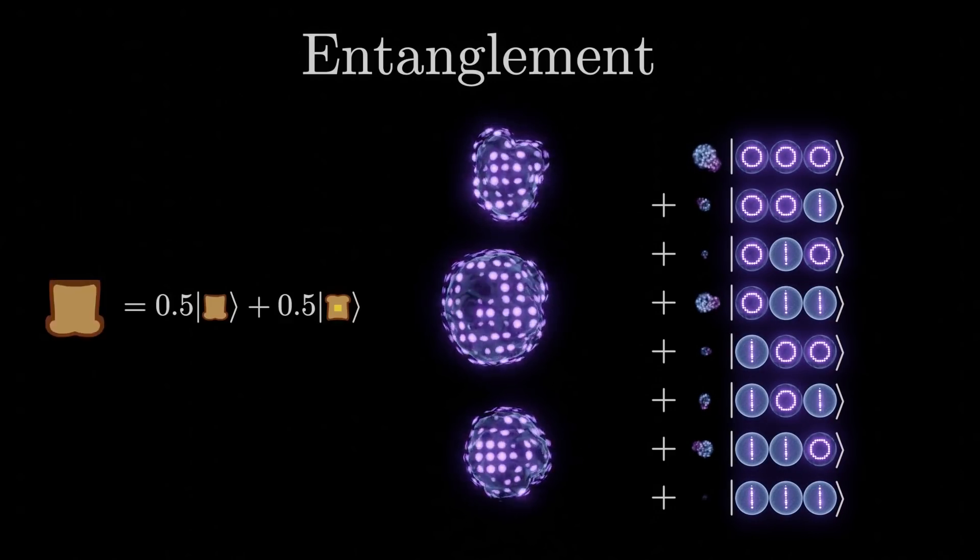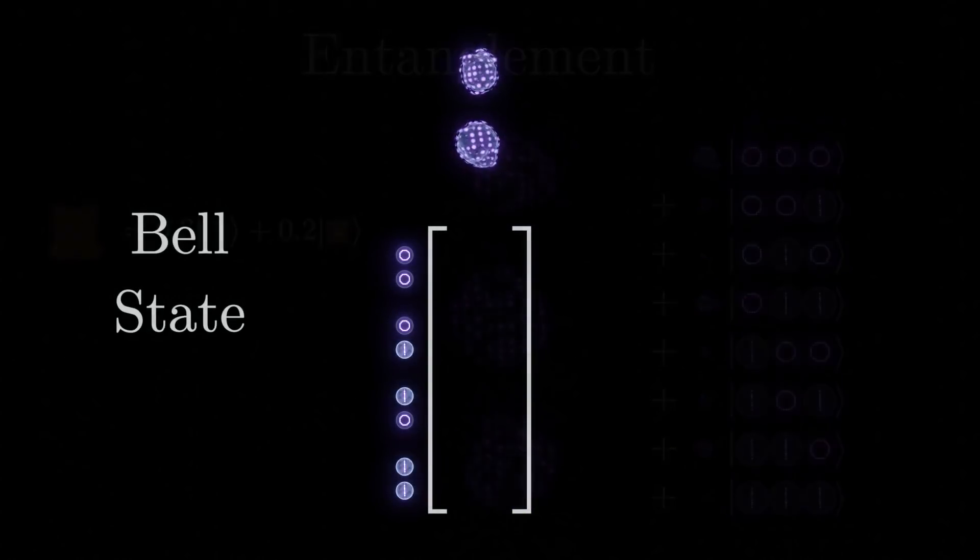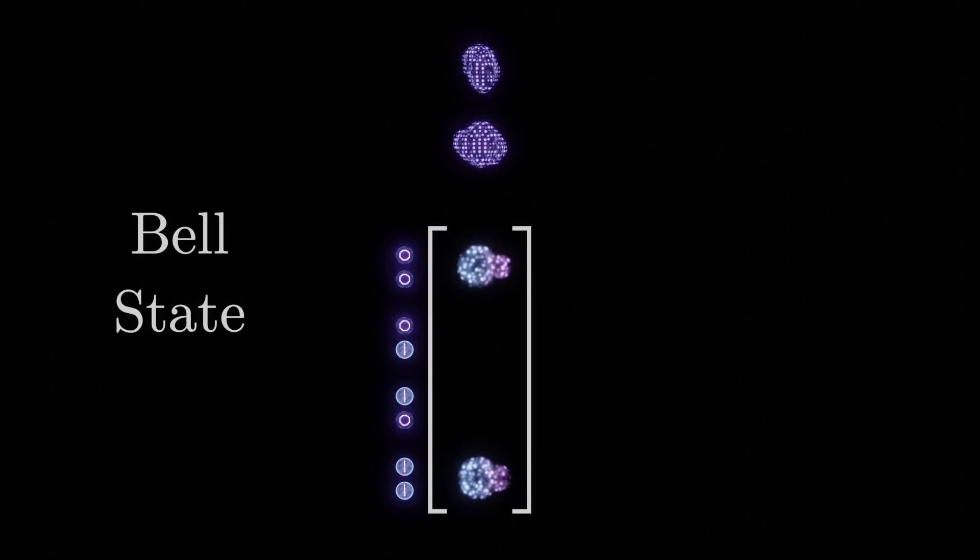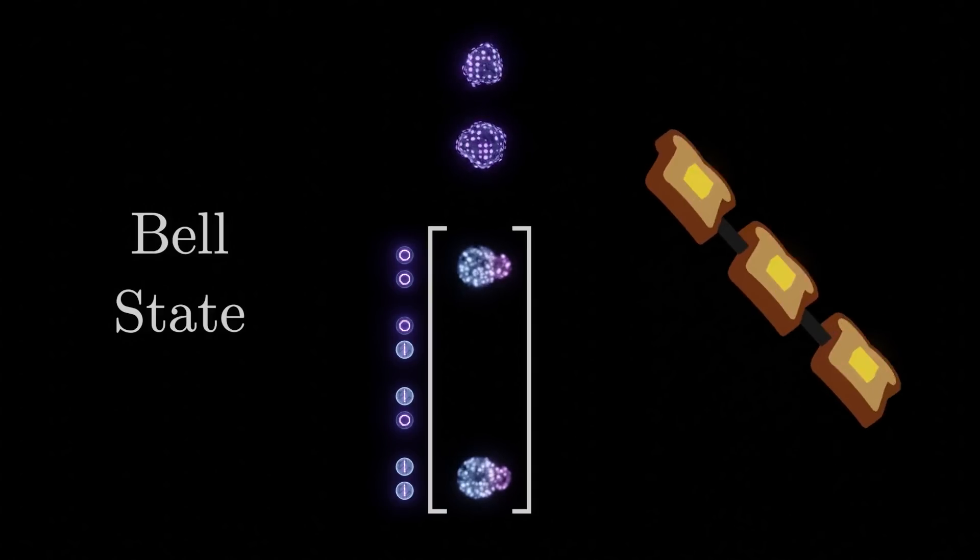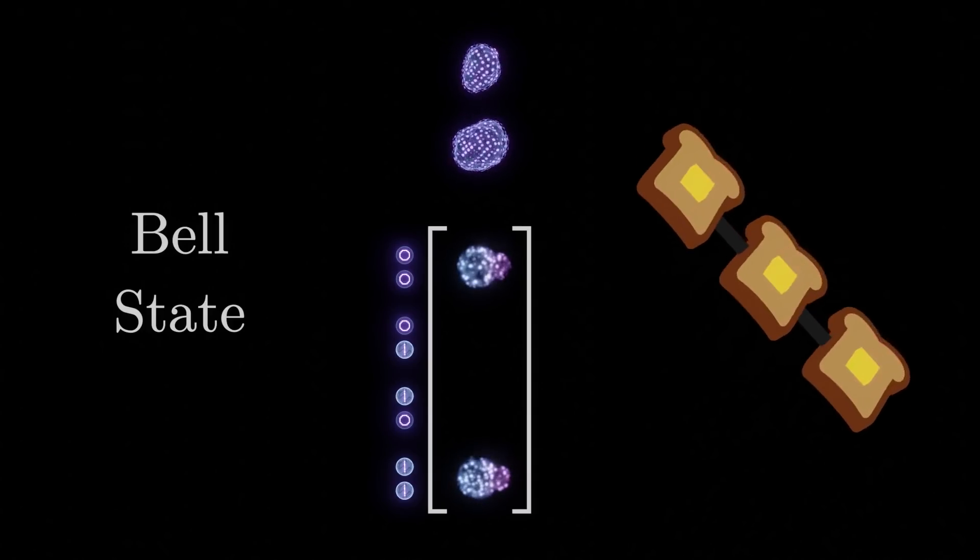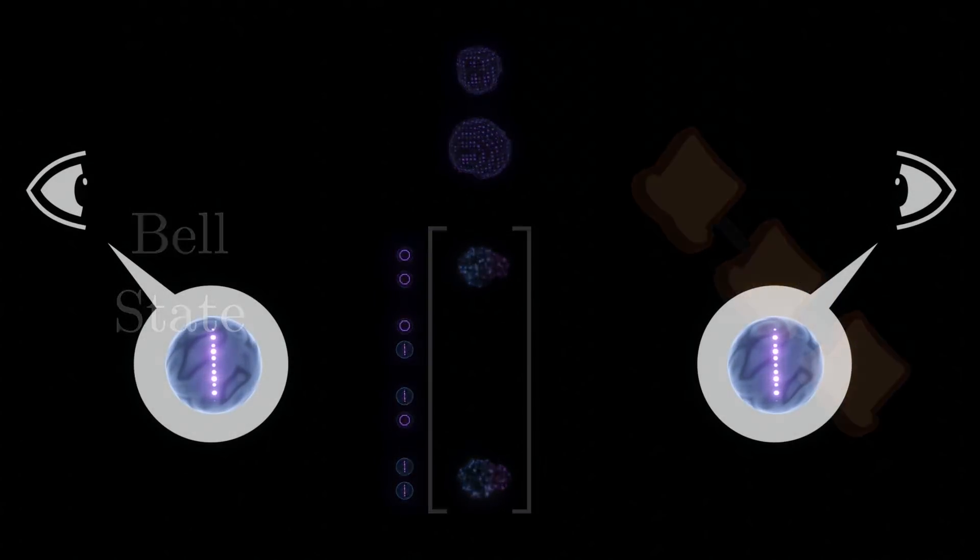One example of the weird things this makes possible is the bell state. This is the name for a state where the system will likely be observed as having either all ones or all zeros, but nothing else. If we wanted our classical system to behave in this way, we would need to physically connect our three pieces of toast. But strangely enough, quantum mechanics has no such requirement. Real world experiments have shown that entanglement still works even when qubits are separated by distances trillions of times their own size.